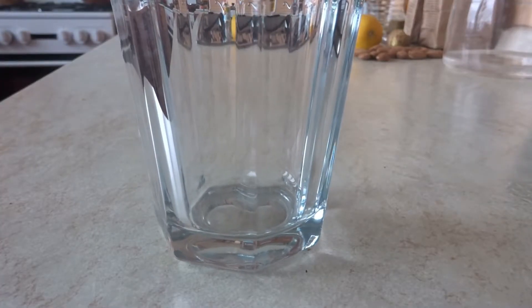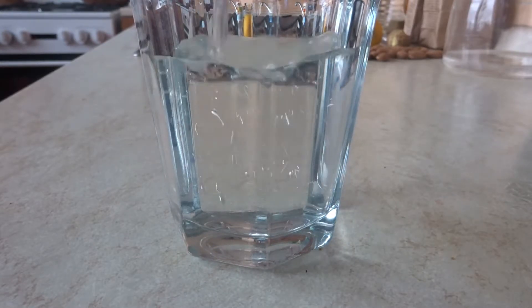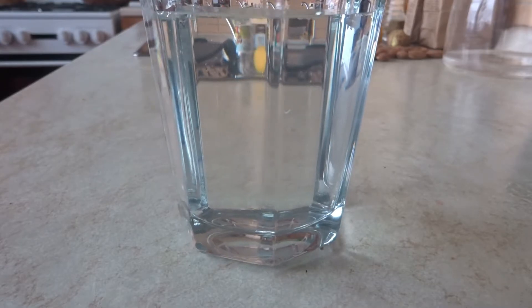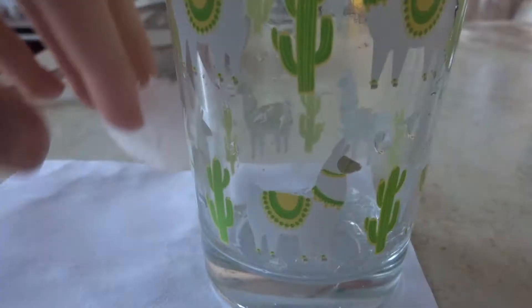With that out of the way we can get to the actual process of how we're going to grow them. First we have to pour off the saturated water into another glass, because we're gonna need it later on. Then carefully remove the layer of crystals by using an end of a spoon or something similar.